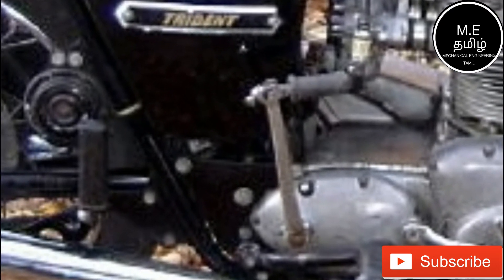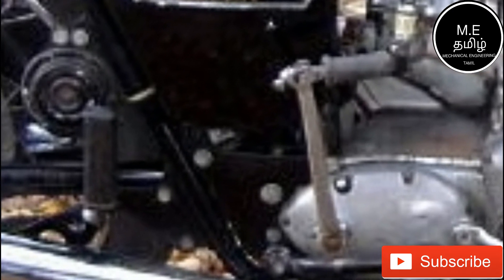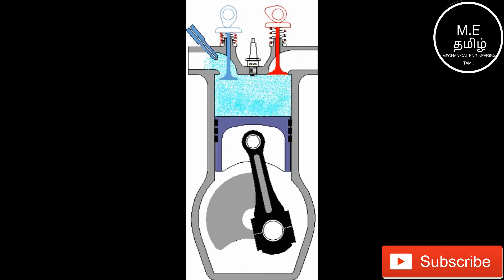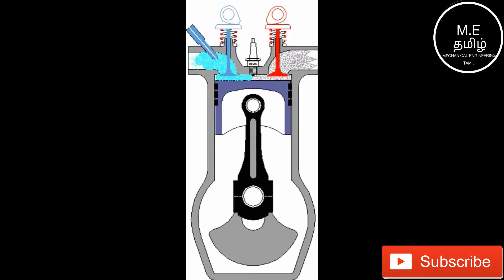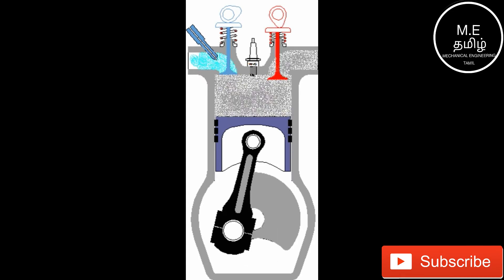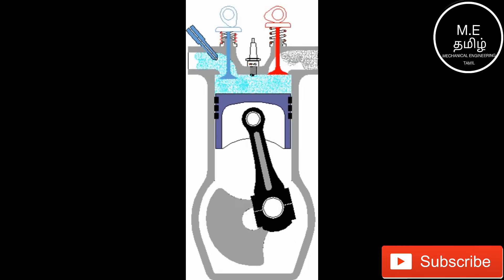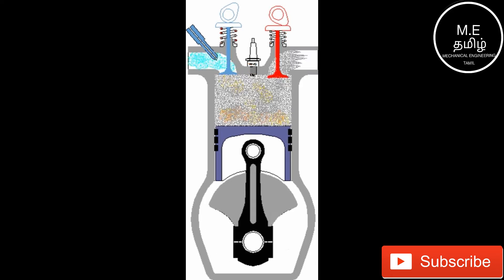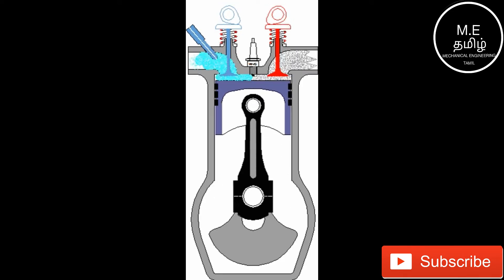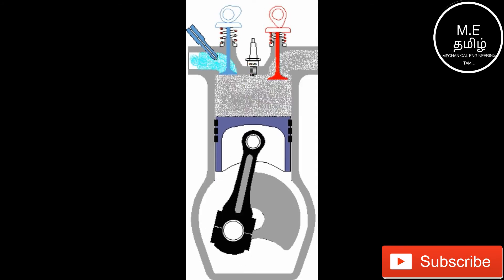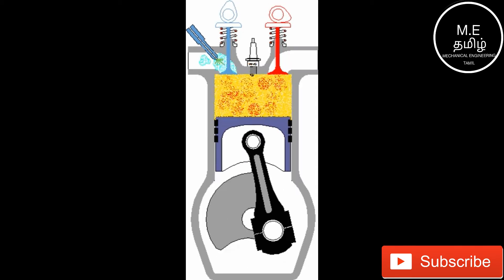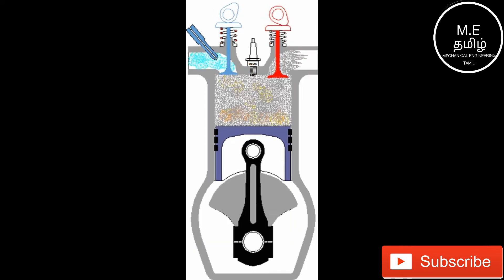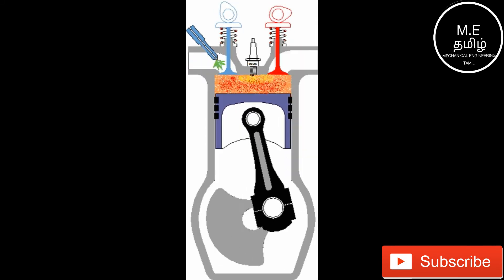If we kick the engine, we will hit a crankshaft. If we hit the crankshaft, it will be connected to the piston and the piston will move. This is how the kickstart works.